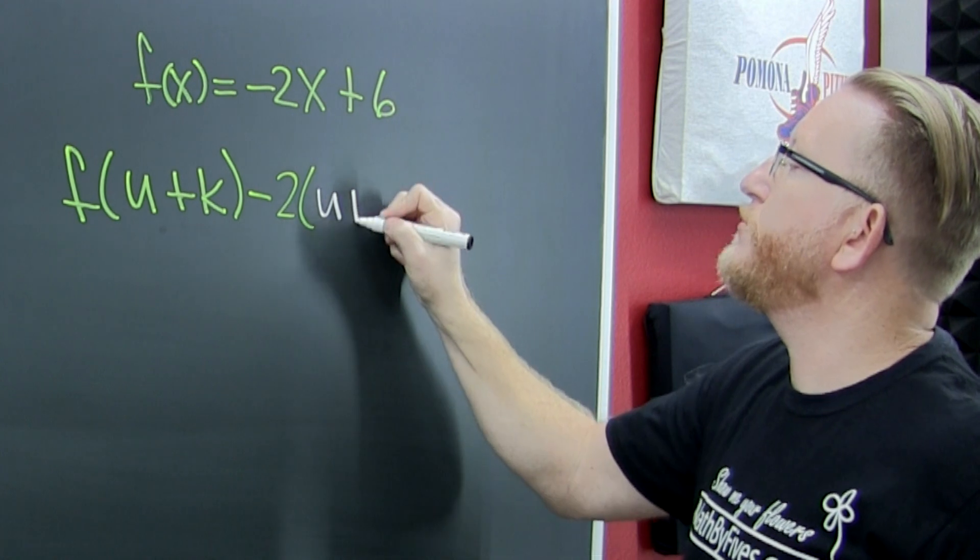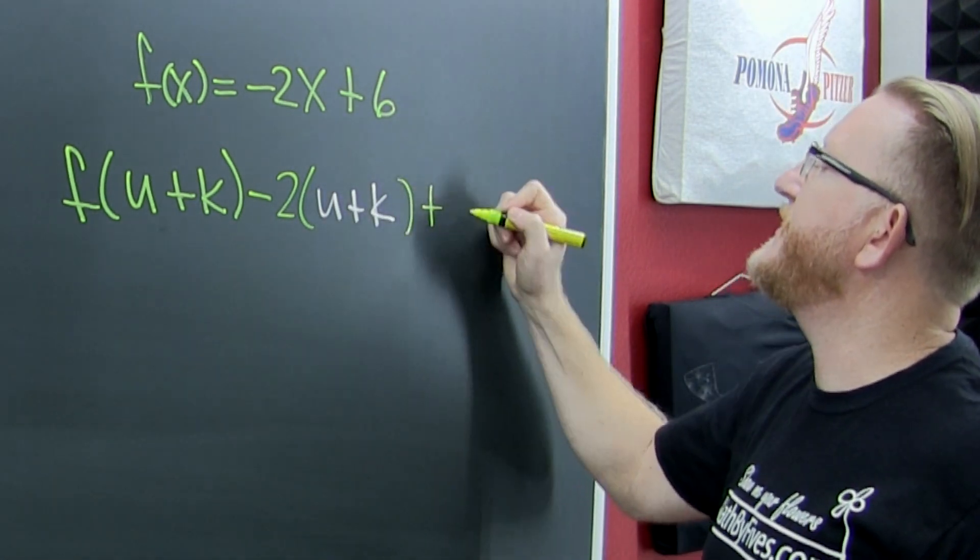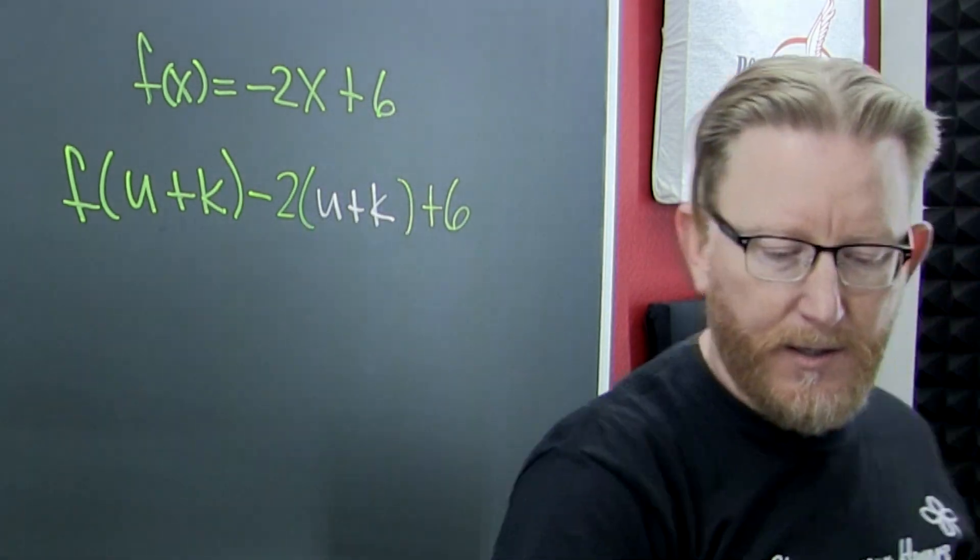That's -2 times u+k. So why do you write it in that way?